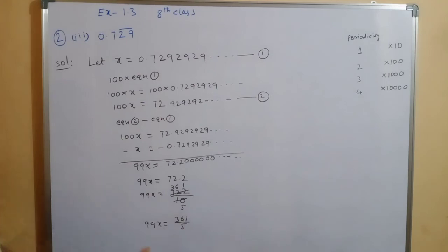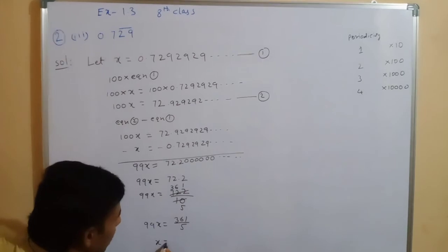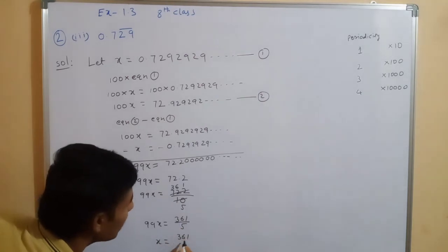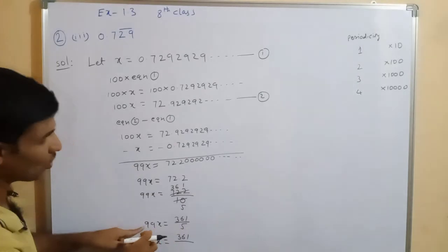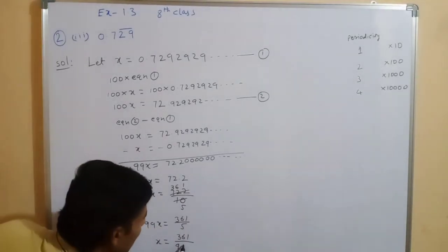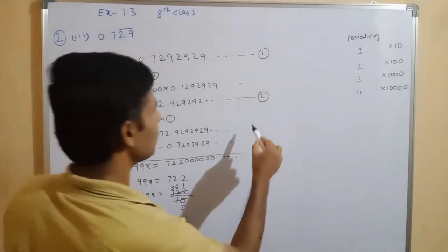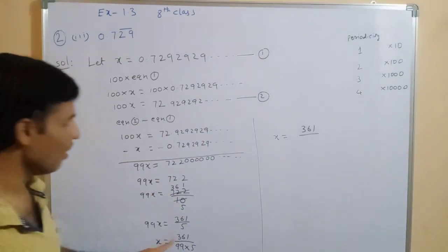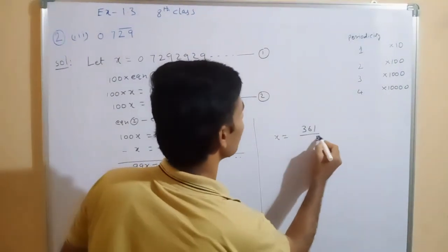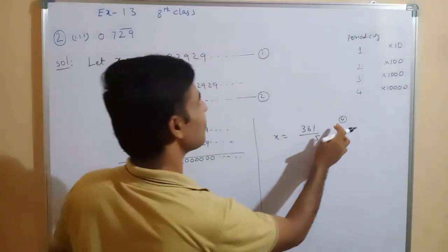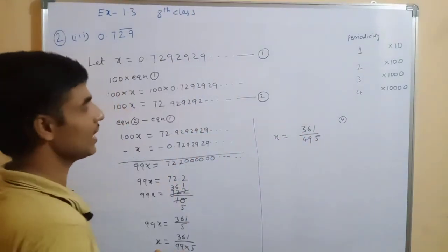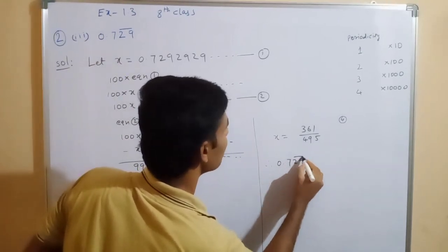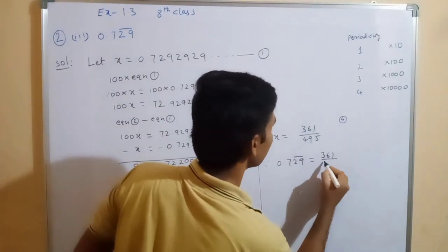So now, transporting 99 to the other side: x equals 361 divided by (99 into 5). Multiplying: 5 times 9 is 45, 5 times 9 is 45, plus 4 gives 49, and altogether 99 times 5 equals 495. So x equals 361 divided by 495. That means 0.7̄2̄9̄ equals 361 divided by 495. This is the answer.